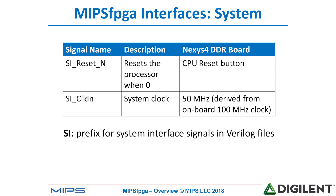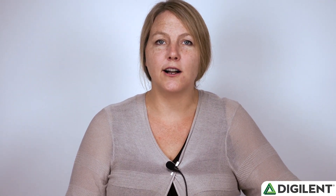The system interface includes two main signals: reset_N — where the N indicates it is low-asserted — and the clock. These signals are prefixed with the SI prefix, indicating system interface. On the Nexus 4 DDR board, the system runs at 50 megahertz, derived from the onboard 100 megahertz clock. The HB light bus allows us to interface with memory and peripherals. It has a 32-bit address bus (H address), a read data bus (HR data), a write data bus (HW data), and a write enable signal and a clock. The HB light bus also runs at 50 megahertz, and its signals have the H prefix.